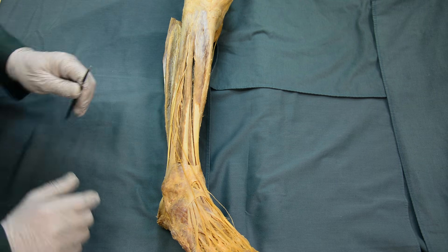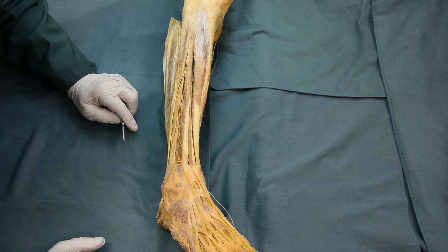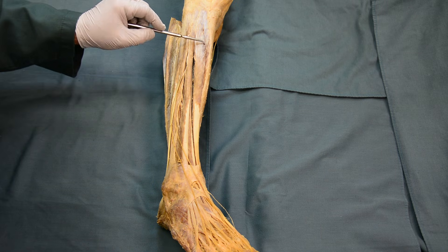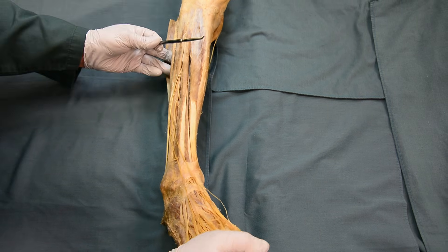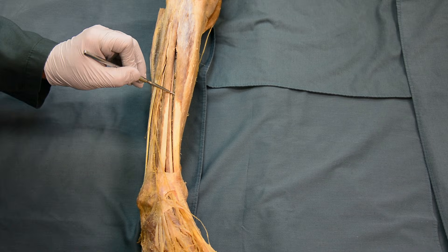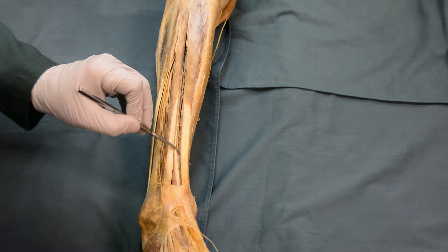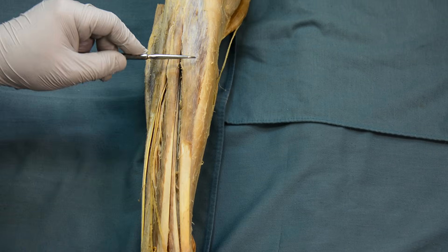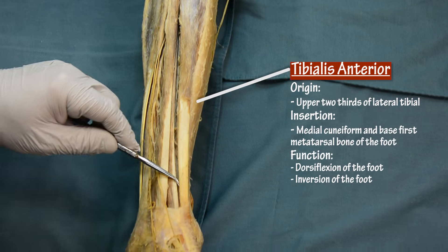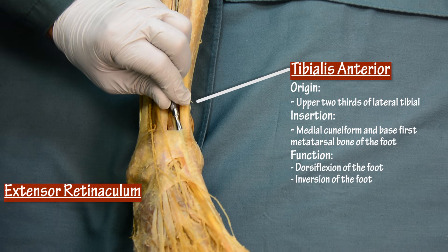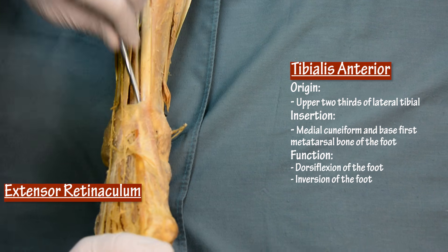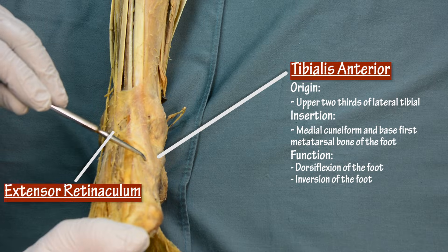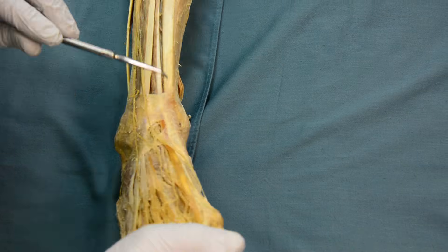Now let's go with the muscles of the anterior leg. The first muscle is the tibialis anterior. Let me trace the muscle all the way down — here is the tibialis anterior, and its tendon passes under the extensor retinaculum, then it inserts to the medial cuneiform and the base of the first metatarsal bone.